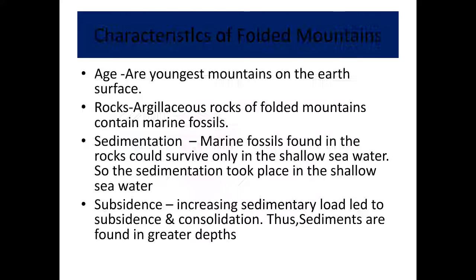Folded mountains are oriented either in a north-south direction or east-west direction. Now let's see the characteristics of folded mountains. They are the youngest mountains on the earth's surface. For example, the Himalayas is one of the examples of folded mountains.